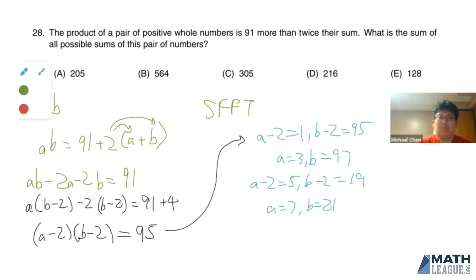So that means the two possible sums of the pair of numbers that we started with, A and B, is either 100 or 28. And the sum of these two sums is going to be 128, which gives us answer choice E.